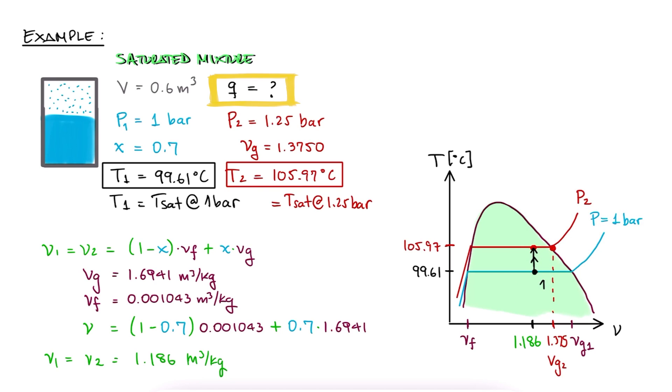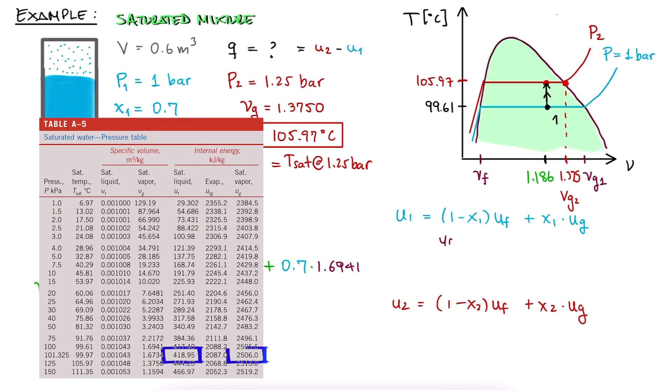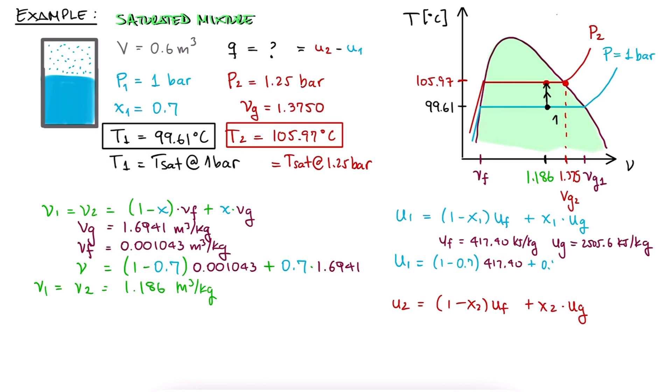Now, what about our last question? How much heat did we transfer? From our first law or energy conservation equation, we know that there was no work or changes in kinetic or potential energy. This means that Q is the change in internal energy U2 minus U1, or the mass times the change in specific internal energy u2 minus u1. This also means that lowercase q is just u2 minus u1. The specific internal energies u1 and u2 can be found if we have the quality x1 and x2, and the saturated specific internal energies uf and ug for both pressure values. X1 we have, and uf and ug can be found from the table at one bar. This means we have U1.